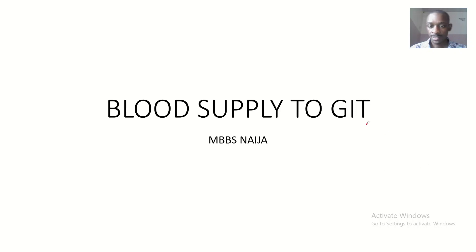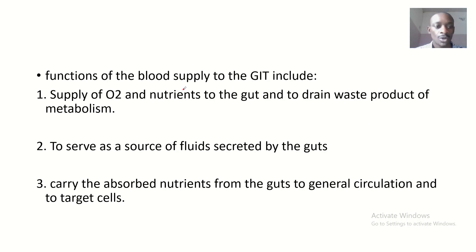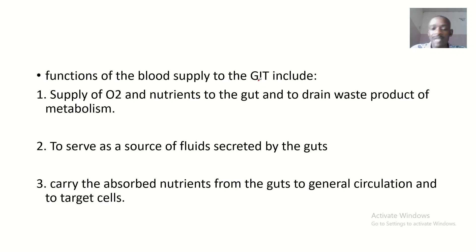We will be looking at blood supply to the GIT — the gastrointestinal system. Before we describe the anatomical arrangement of blood supply to the gastrointestinal system, let's first talk about the functions of this blood supply.